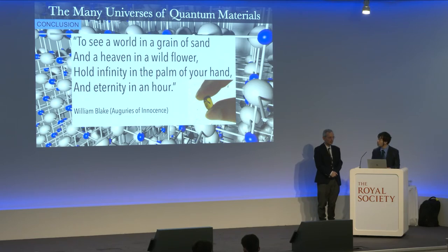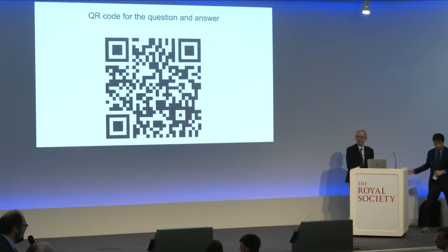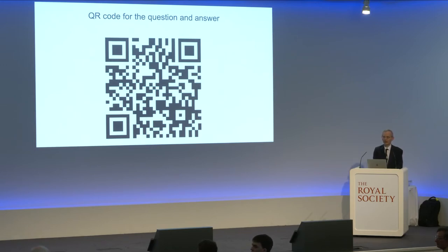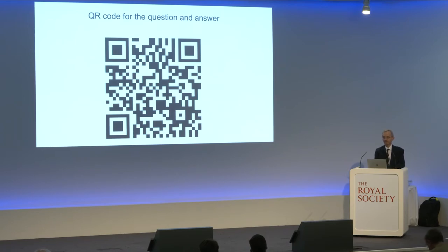Thank you for a very lovely talk. For those on our YouTube channel or live audience, please take down the Slido link and type in your questions. We'll give you about 30 seconds. The first question is from Manav: where is the problem in finding a unified theory of quantum mechanics and relativity — what's the stumbling block at the moment?